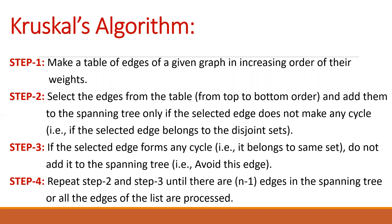We add a selected edge only if it does not make any cycle in the graph. Since Kruskal's method is based on disjoint sets, if the selected edge connects two vertices belonging to two different sets, then we join those edges — meaning we add that edge to our spanning tree. But if they belong to the same set, we avoid that edge and do not add it to the spanning tree.